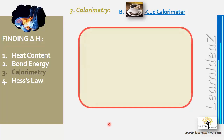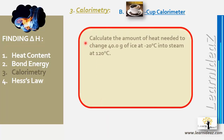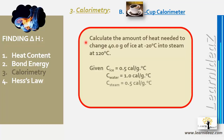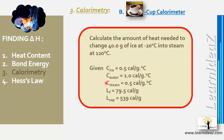Example problem: Find the amount of heat needed to change 40 grams of ice at −20°C into steam at 120°C, given the specific heat of ice, water, and steam, plus the latent heat of fusion and latent heat of vaporization.